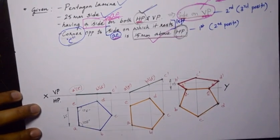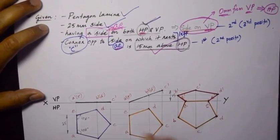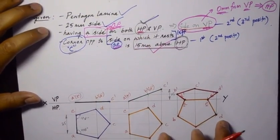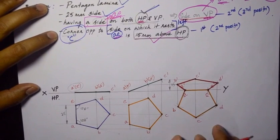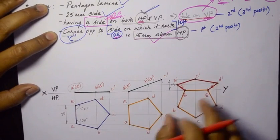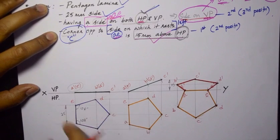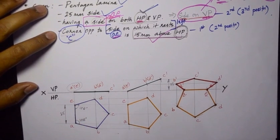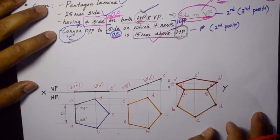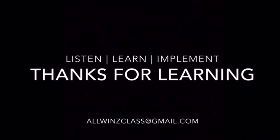That gives the solution for this problem. We'll look into more problems where a side is on both HP and VP, and I'm going to solve a couple of problems in the SolidX software. I hope all of you are clear with the construction using the arc method to shift position from one to another, and also how to draw the pentagon by taking interior angles of 108 degrees. If you have any doubts, you can drop a comment or contact me through my email ID.